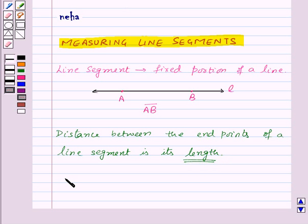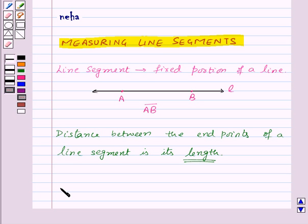So if we want to compare any two line segments then we find a relation between their lengths. We can compare two line segments by observation — that is, by just looking at them to see which one is longer. Also we can compare two line segments by tracing, using tracing paper. And thirdly we can compare two line segments using a ruler and a divider.